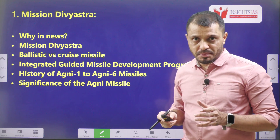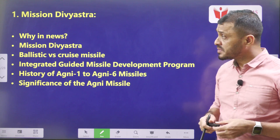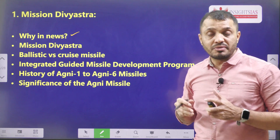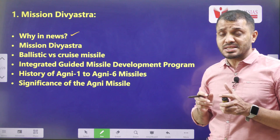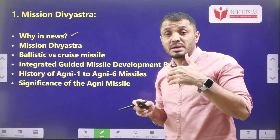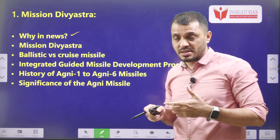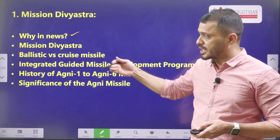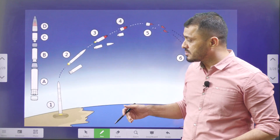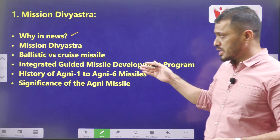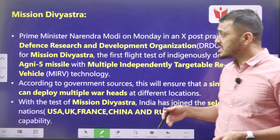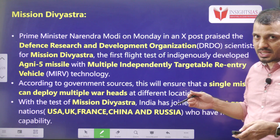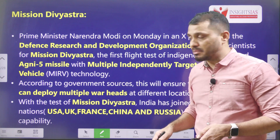Before we discuss further regarding this topic, let us look at the video components. In this video, we are going to mainly cover why this is in news — that means the context. The context is that Prime Minister praised DRDO efforts in their successful test firing of the Agni-5 missile and the advanced technology. We are going to discuss about that advanced technology, how it is going to be helpful to India, and how this can keep India in the league of advanced countries. The technology is about the MIRV technology.